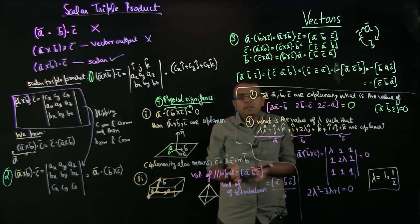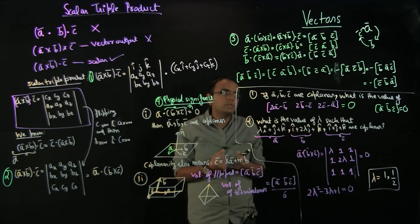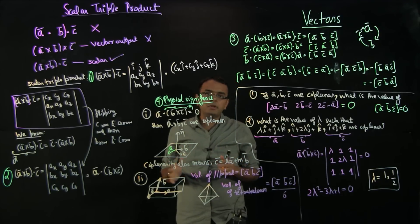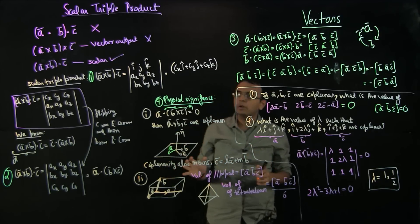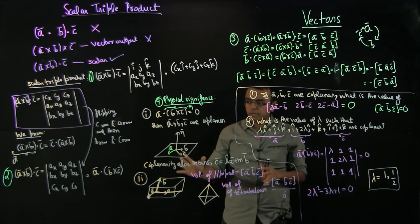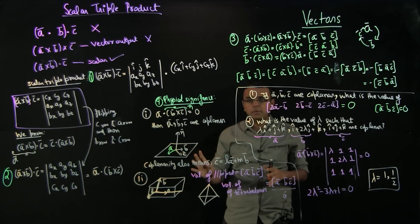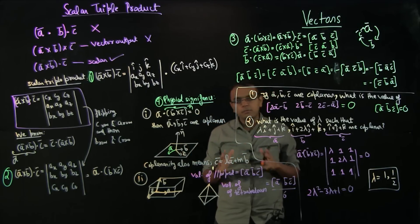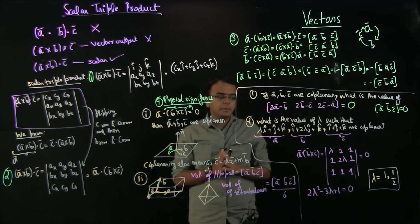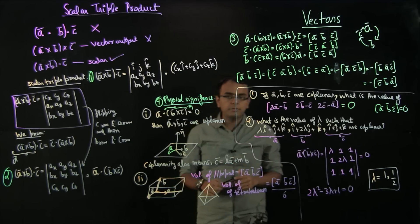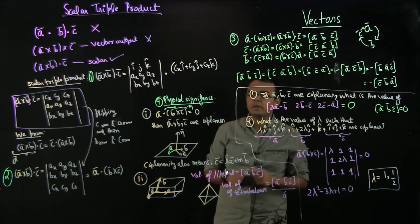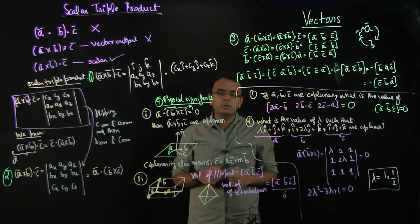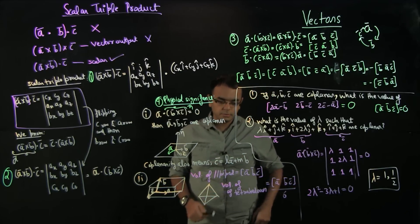In this video we covered the very important topic of scalar triple product. We discussed its definition, four key properties, and two examples to understand its meaning and application. In the next video we will be discussing the vector triple product. I hope you enjoyed this video — please check out the next video. Thank you.